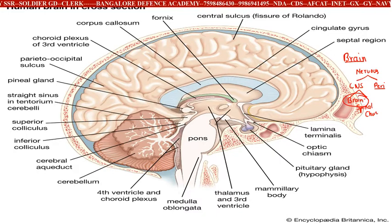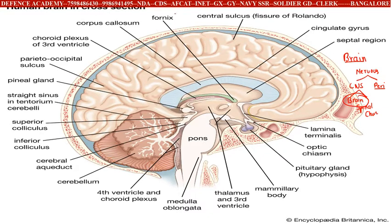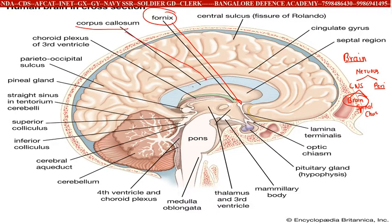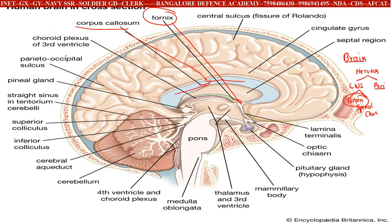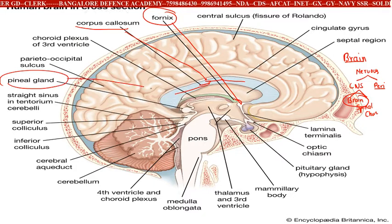In front of your screen you can see an image of the brain, which is very important. The first part is the fornix, shown here in green color. Next you have the corpus callosum, shown here in blue. Next you have a very important part — the pineal gland, which we have covered in our hormones chapter.